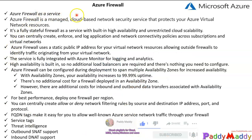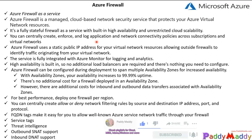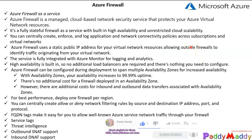Azure Firewall is a fully managed cloud-based network security feature from Microsoft Azure to protect all your network resources. It's a fully stateful firewall-as-a-service built on high availability and unrestricted cloud scalability. You can centrally create and enforce all logging and monitor your entire network connectivity across subscriptions and VNets. Azure Firewall uses a static public IP so you can get exact log information for outbound traffic, apply firewall rules for application-specific filtering, and get a specific identity for traffic originating from your virtual network.